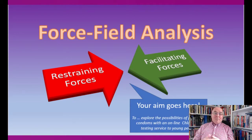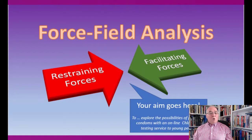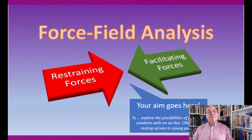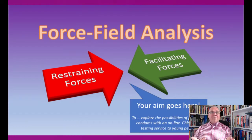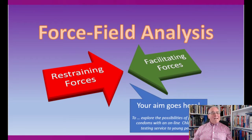If you had a sheet of paper, you could write your aim in the middle — and I've written it down here. Your aim is to explore the possibilities of providing condoms with an online chlamydia testing service to young people. Start thinking about all the restraining forces: the reasons, the arguments, the rationale that may be given for not providing condoms with this chlamydia testing service. Think of all the reasons against achieving this aim. You might write the aim in the middle of the page and draw an arrow coming in from one direction representing all your restraining forces. Try to think of as many reasons as possible why this initiative should not happen.